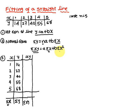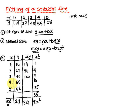Next, you frame a new column x squared. The summation of this column gives sigma x squared. So x squared values are: 1 squared is 1, 2 squared is 4, 3 squared is 9, 4 squared is 16, 5 squared is 25. Adding these gives 55. For xy: 1×14 is 14, 2×27 is 54, 3×40 is 120, 4×55 is 220, 5×68 is 340. Adding the xy column gives 748.